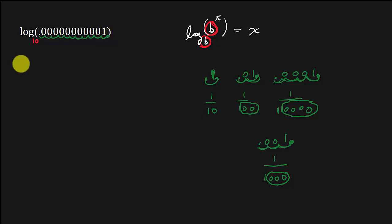All right. So that means this is the log of what? 1 over, 1 over, and then I'm going to have a 1 with 11 0s, right? 1, 2, 3, 4, 5, 6, 7, 8, 9, 10, 11.